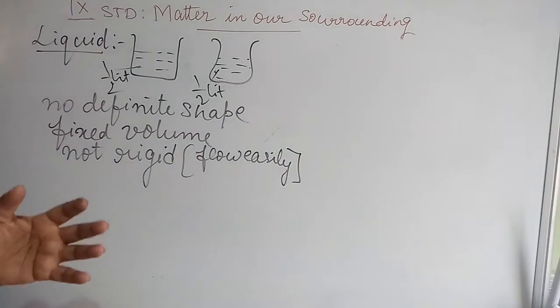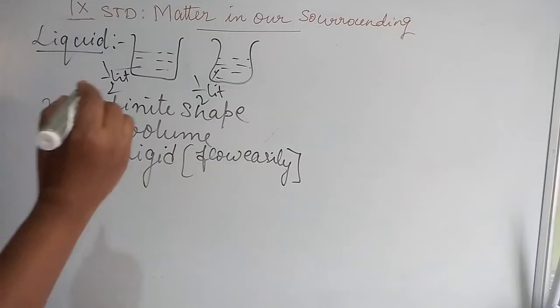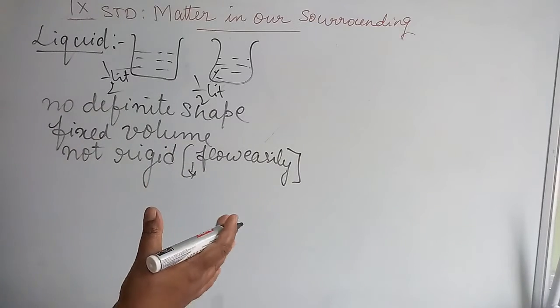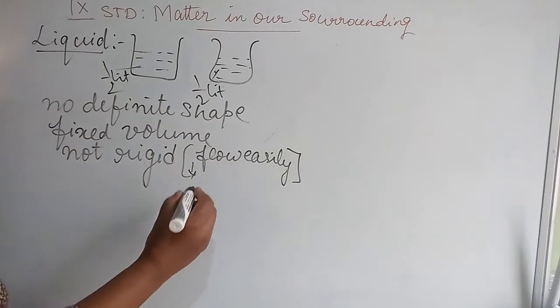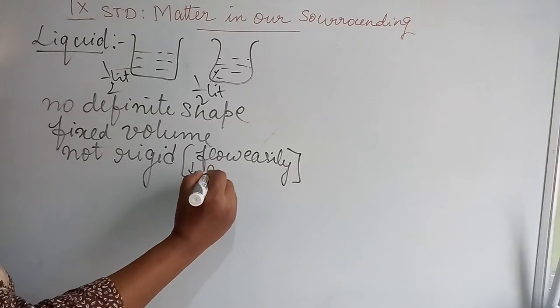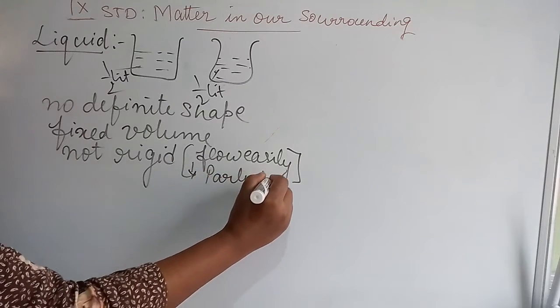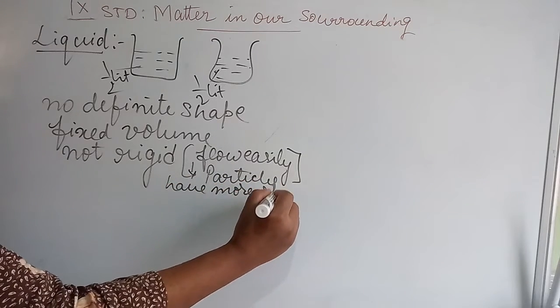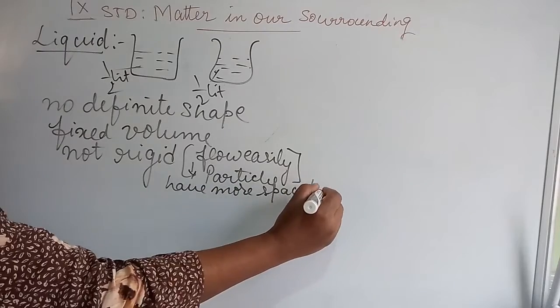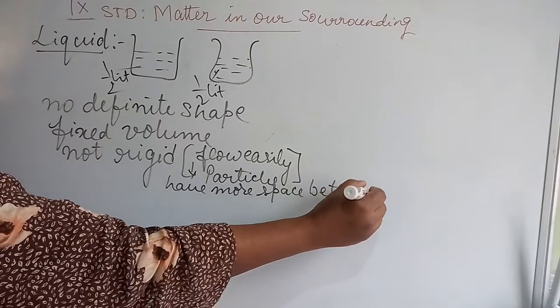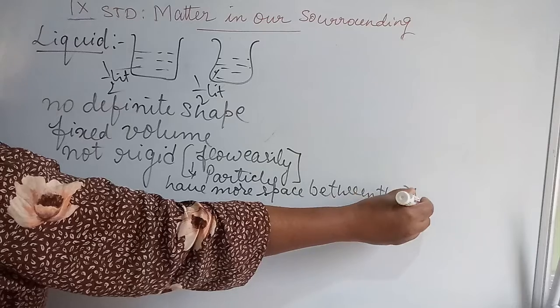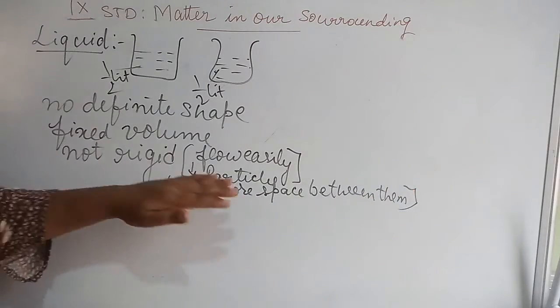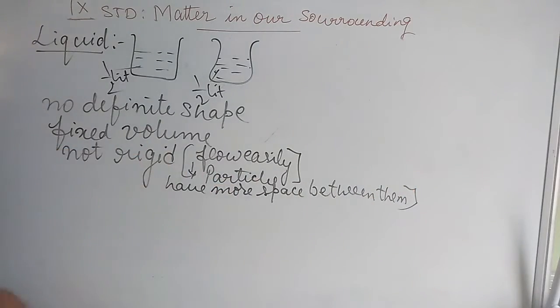This is because of the particles present in liquids. The reason for flowing easily and not being rigid is that particles have more space between them. This is the main reason for liquids to flow easily.